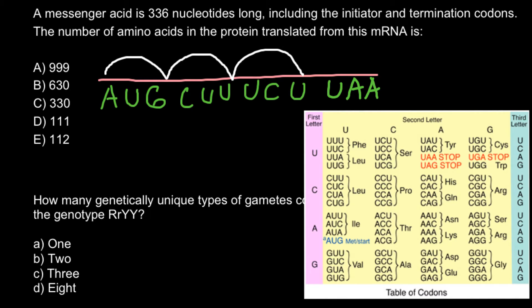As you can see, each three nucleotides code for a specific amino acid. For example, AUG or the start codon codes for methionine. The next codon CUU codes for leucine, and UCU codes for serine. The stop codon is not translated into a protein — when the ribosome reaches this codon, translation stops because there is no tRNA that would bring an amino acid. Other stop codons are UAG and UGA.